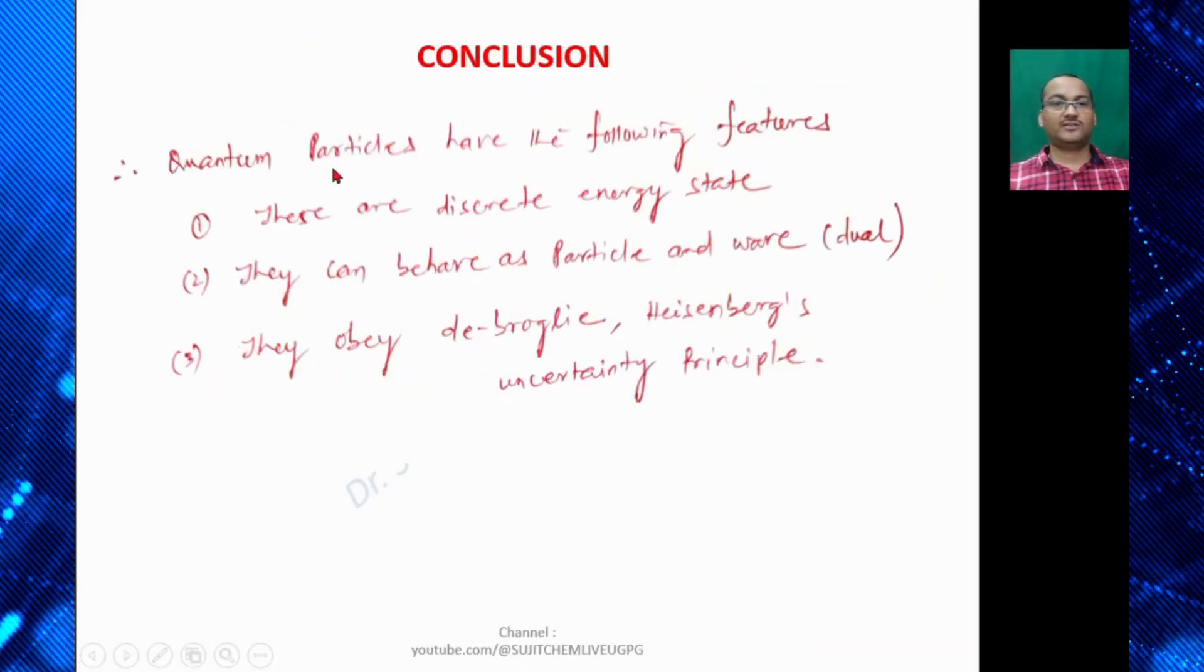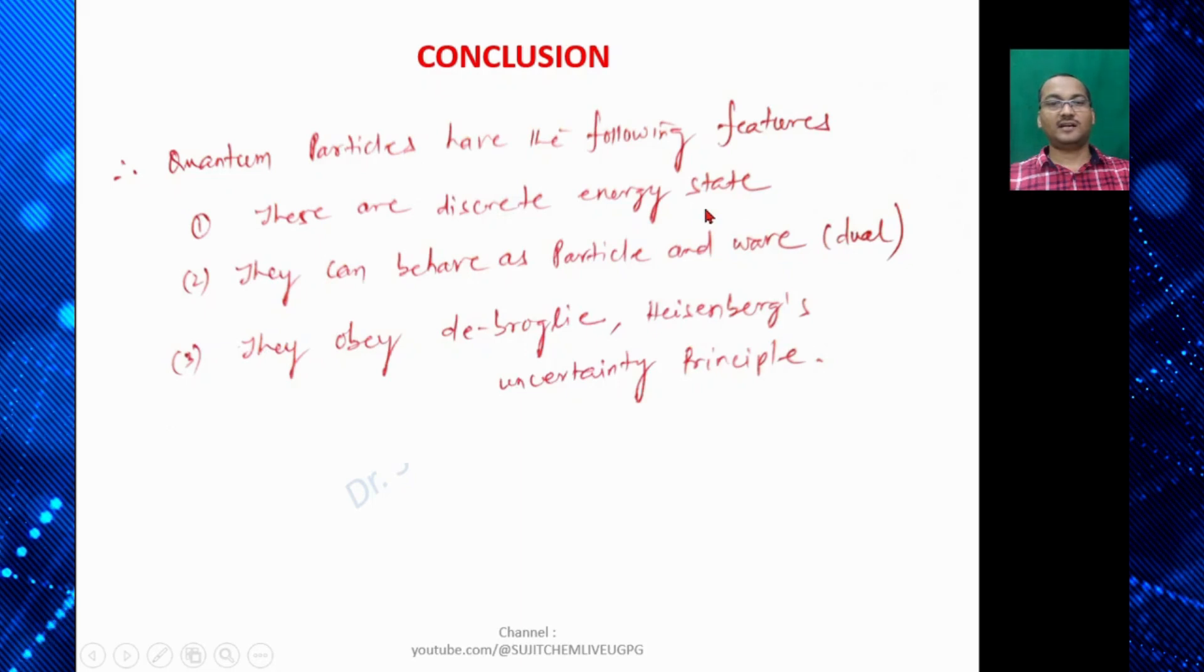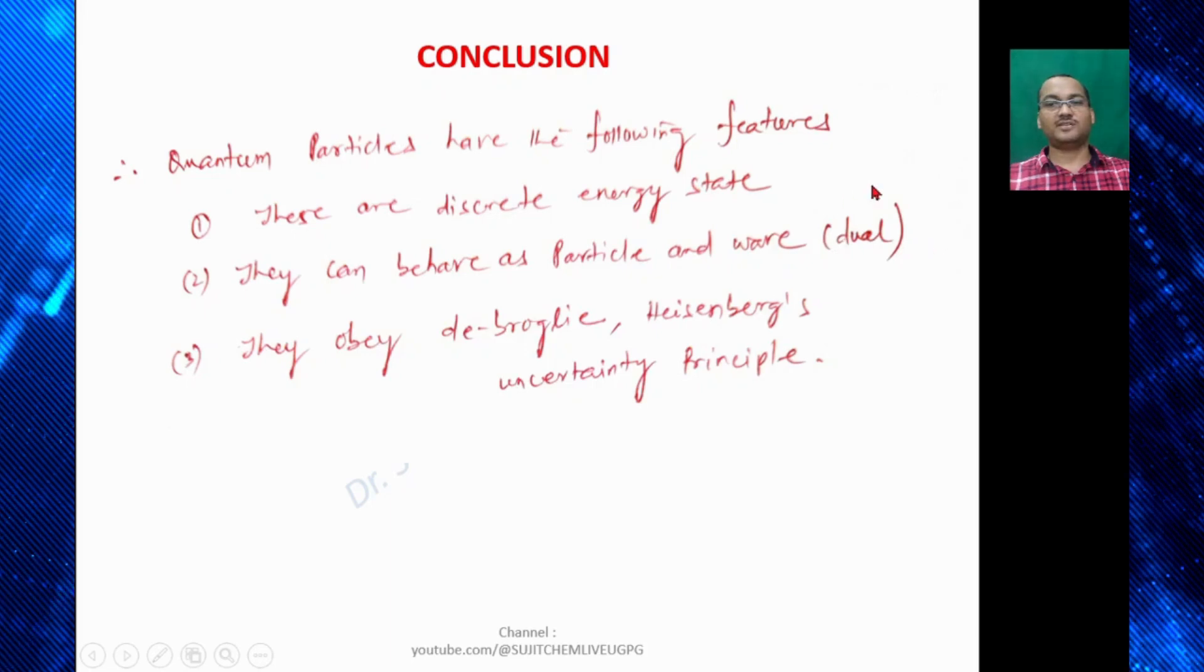So in conclusion, quantum particles have the following features. They have discrete energy states. They can behave both as particle and wave. That means they possess dual character. And they will obey both de Broglie and Heisenberg's uncertainty principle.